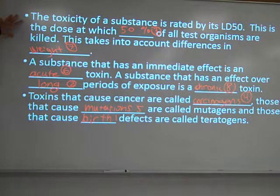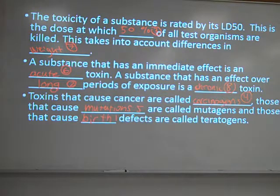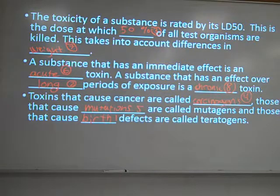The LD stands for lethal dose, and the 50 stands for 50%. That's when they take all the bunnies and the cute little mice and stuff, and they inject them or expose them to different levels of toxins gradually. When they hit a level at which 50% of the organisms die in that test group, that's called the LD50. It's usually a value in mass of toxin per mass of the organism being tested on — so many milligrams of mercury per kilogram of mouse or rabbit to kill half of them.